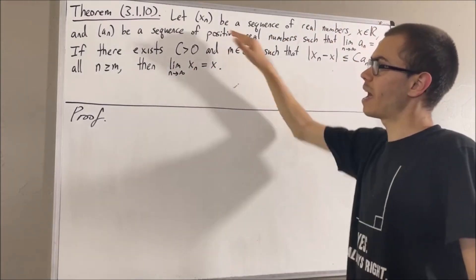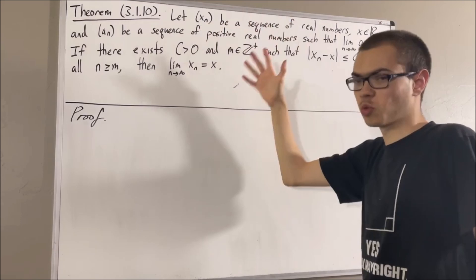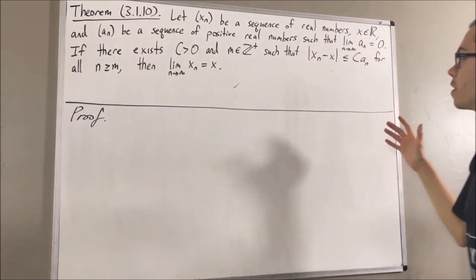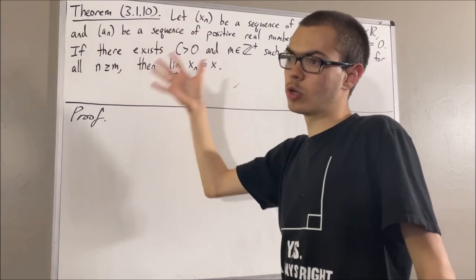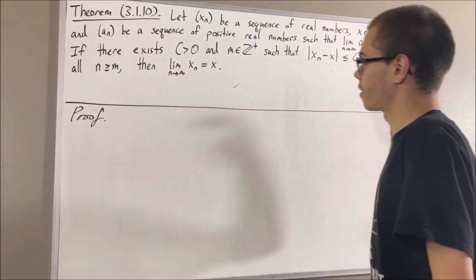Now, xn refers to the sequence x1, x2, x3, and so on and so forth. an refers to the sequence a1, a2, a3, and so on and so forth.